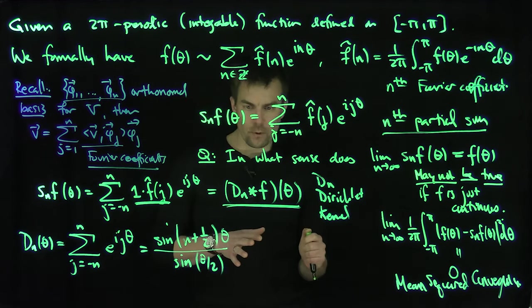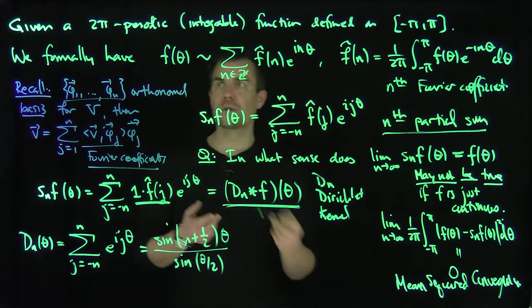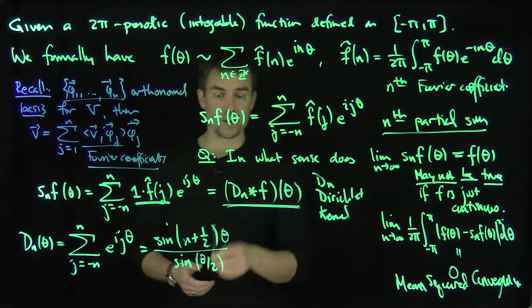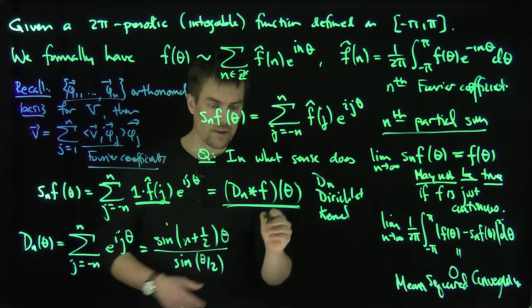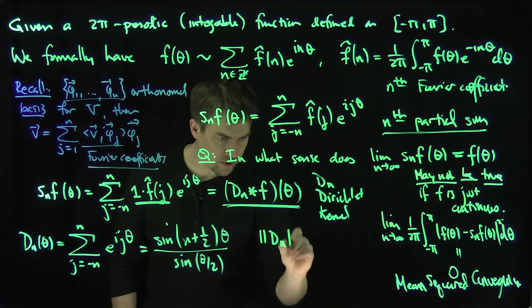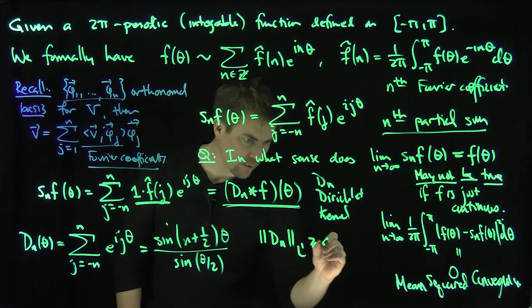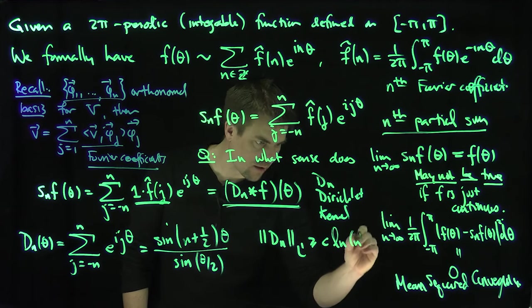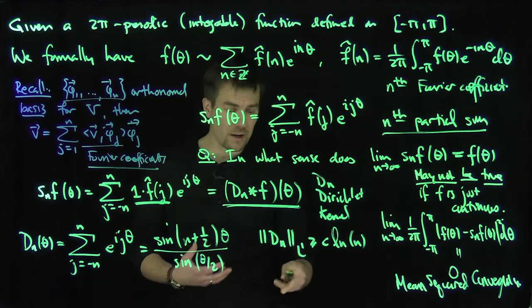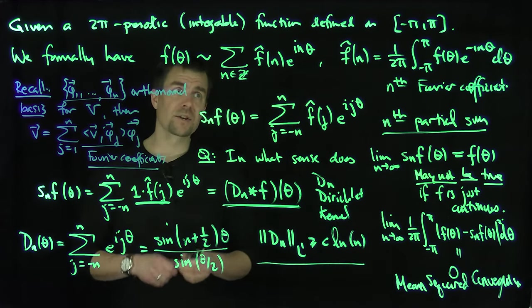Now, one sort of unfortunate thing about the Dirichlet kernel is that you can show that this Dirichlet kernel is not integrable as n goes to infinity, because this Dirichlet kernel grows like a logarithm. In other words, we can show that the L¹ norm of this Dirichlet kernel is greater than or equal to constant times the natural log of n. So in other words, there's not a uniform integrability as n goes to infinity. So this is going to prevent me from using some summability methods and other things.